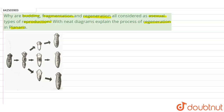We know that reproduction is a process by which living organisms produce young ones of their own kind. Reproduction can be broadly divided into two categories: on one hand we have the asexual mode of reproduction, and on the other hand we have the sexual mode.